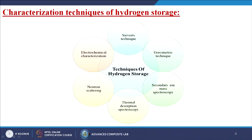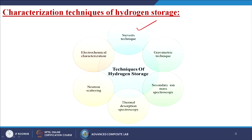Now, what are the characterization techniques of hydrogen storage? We are going to capture the hydrogen, so what characterization do we need to perform to prove that this is stored hydrogen? There are several methods: Sieverts technique, gravimetric technique, secondary ion mass spectroscopy, thermal desorption spectroscopy, neutron scattering, and electrochemical characterization — total six techniques available today. We will discuss them one by one.